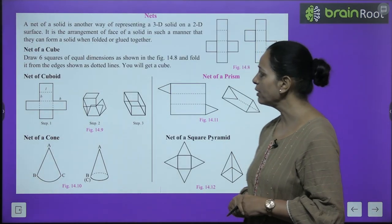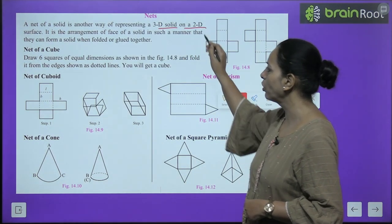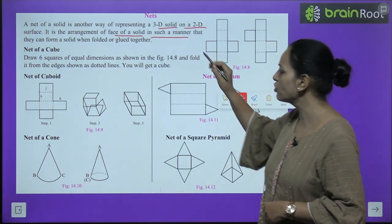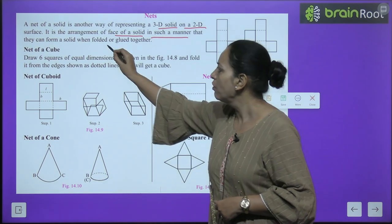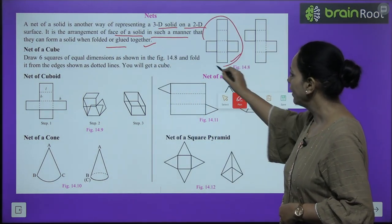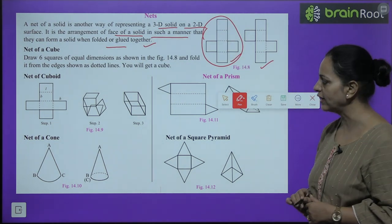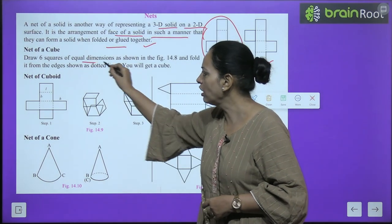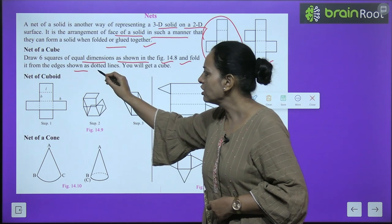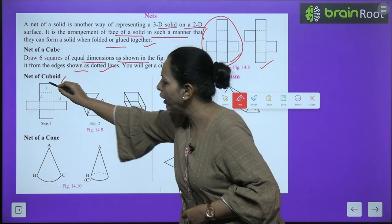Nets: A net of a solid is another way of representing a 3D solid on a 2D surface. It is the arrangement of faces of a solid in such a manner that they can form a solid when folded or glued together. These are cut-outs - when we fold this, a cube will be formed. These are nets of a cube. Draw six squares of equal dimension as shown in this figure and fold it from the edges shown as dotted lines - you will get a cube.